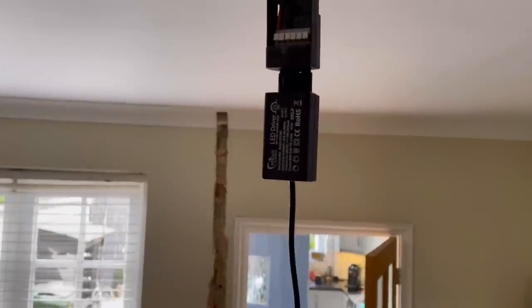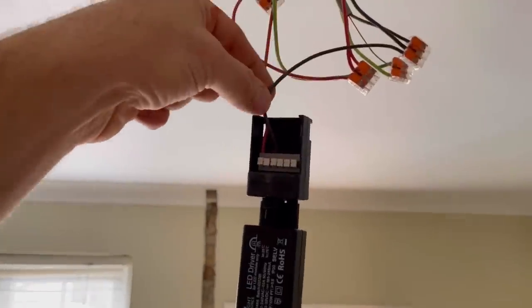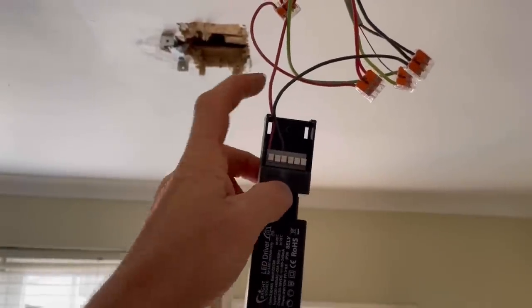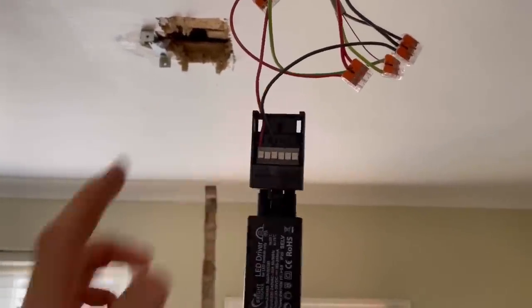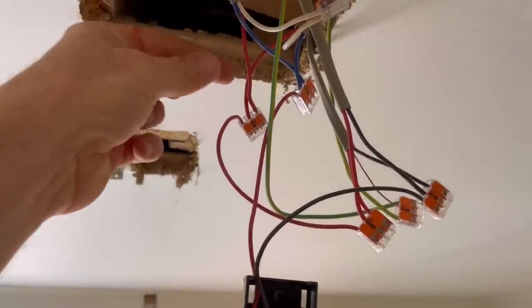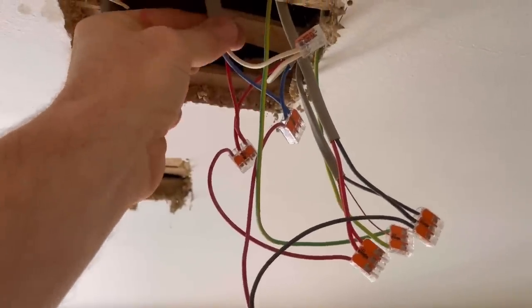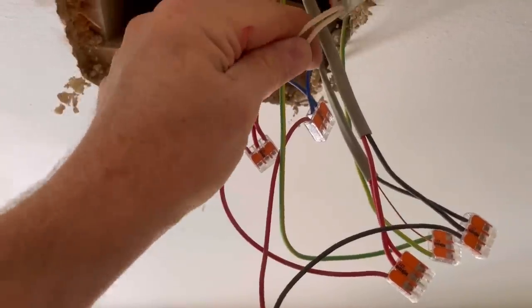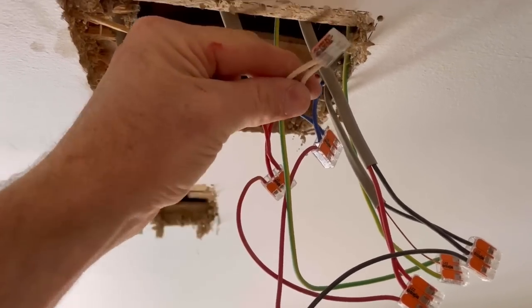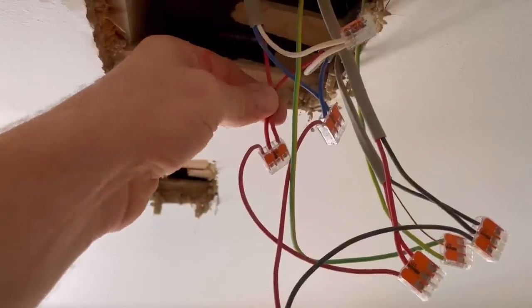I've just took a neutral straight to the light. Obviously there's no CPC, no earth at the moment, but this isn't obviously going to stay like this. Now we're going to look at the three-core cables or the two-way lighting. As said previously, the two white wires I've used as the commons.